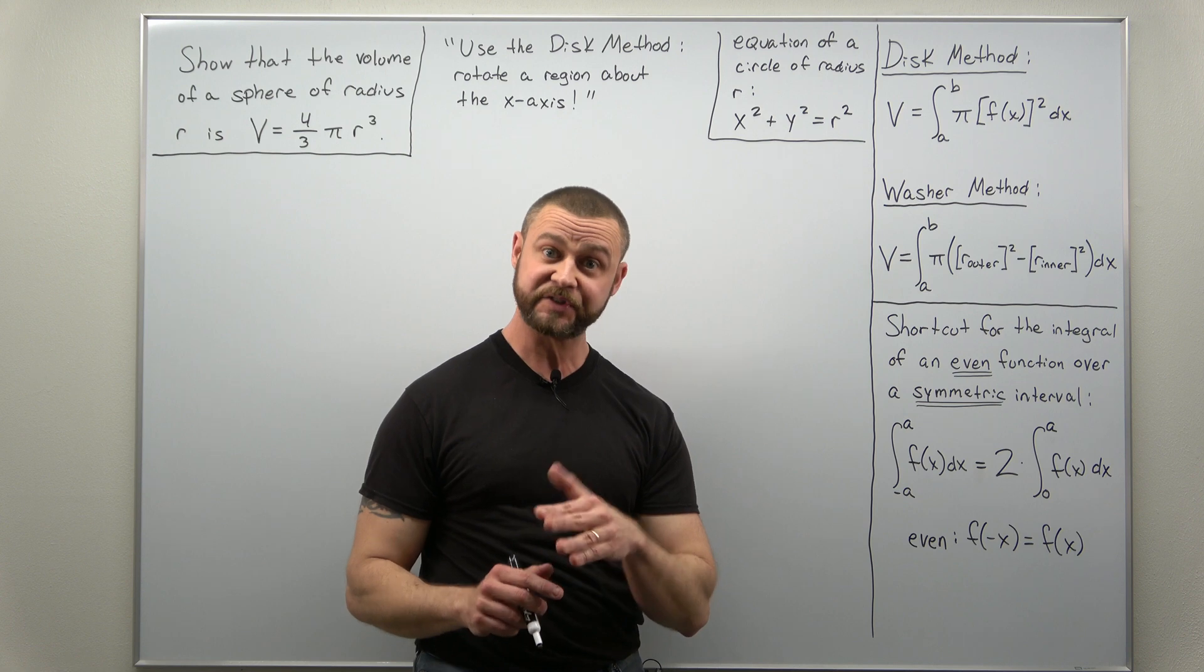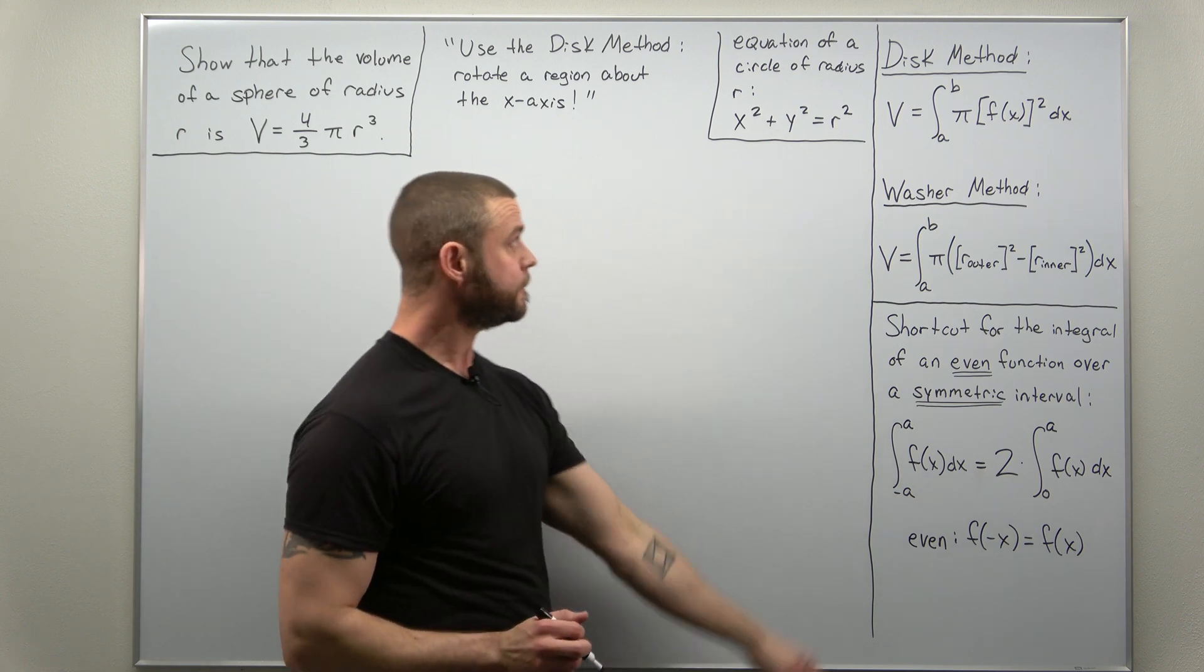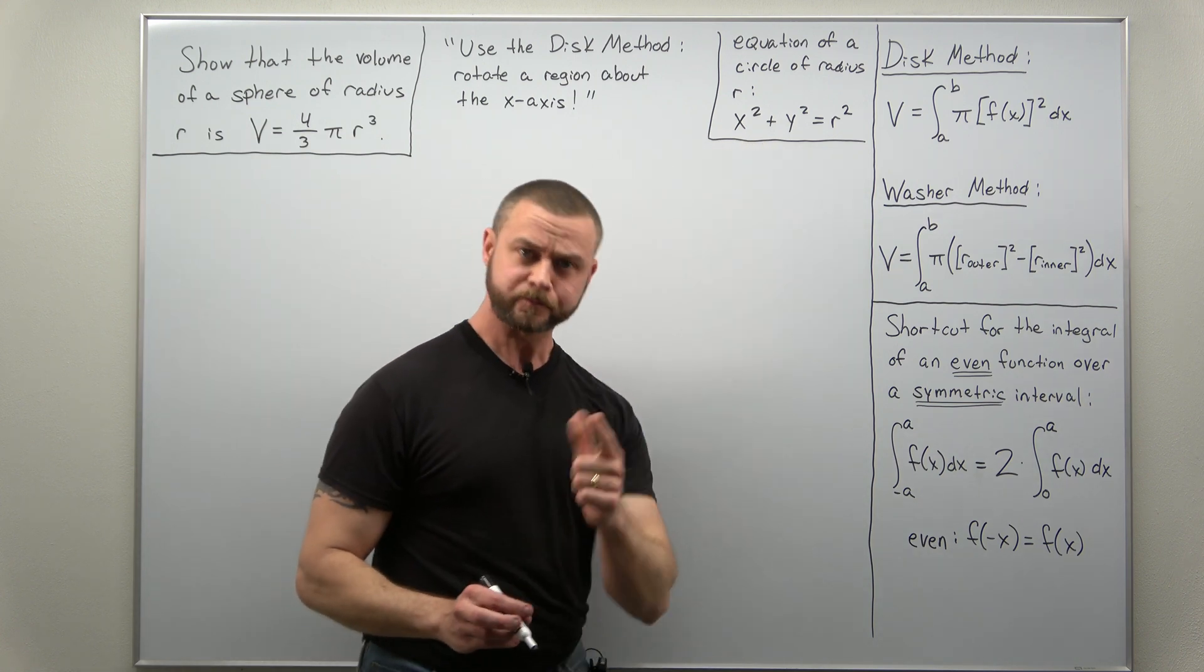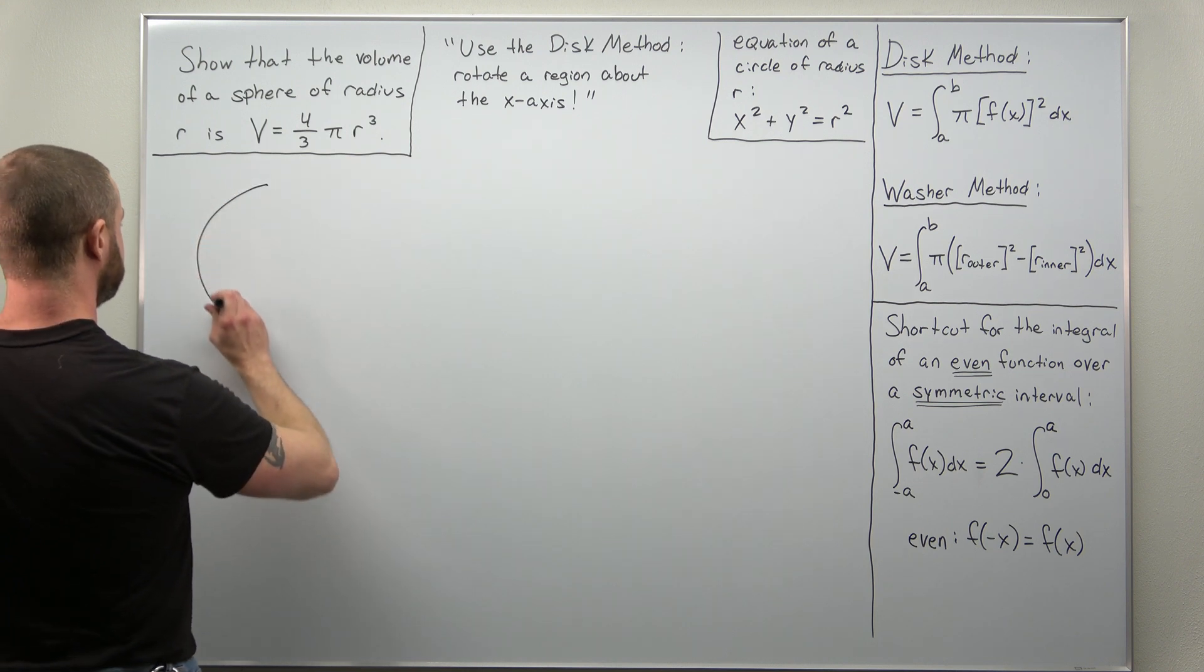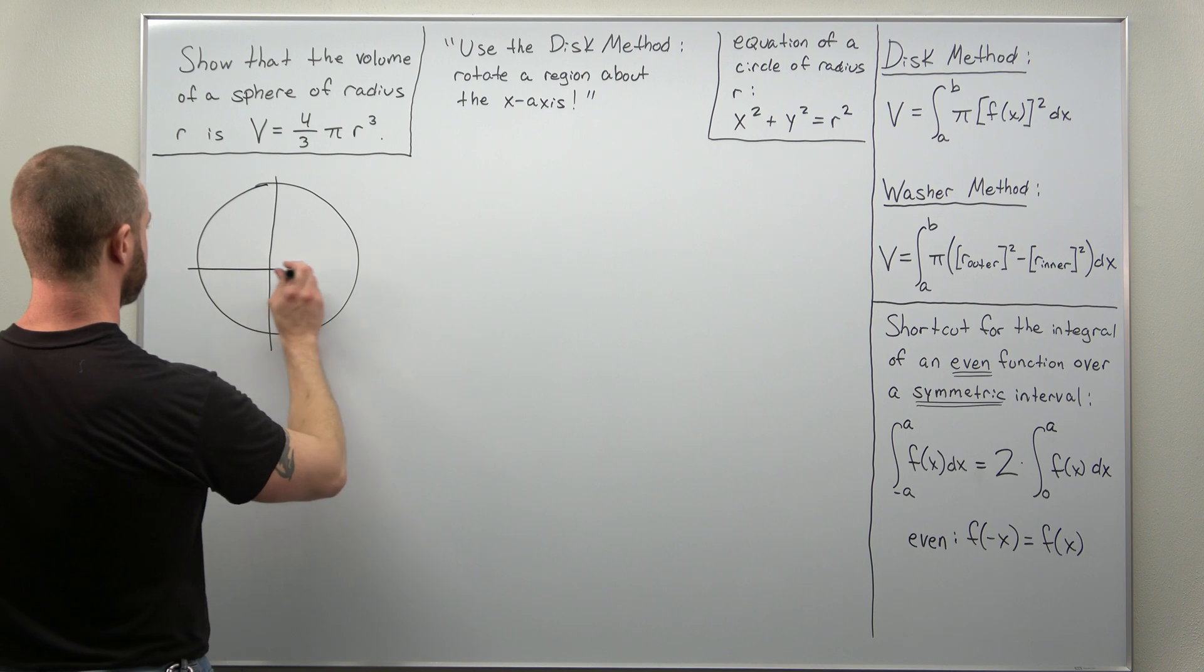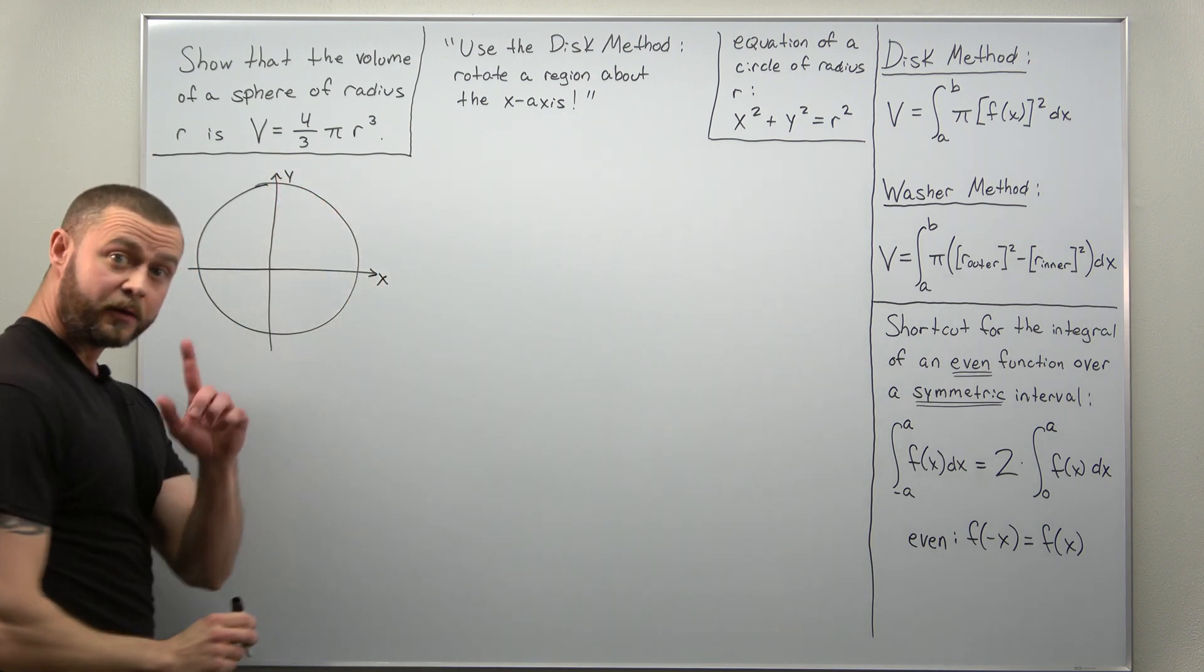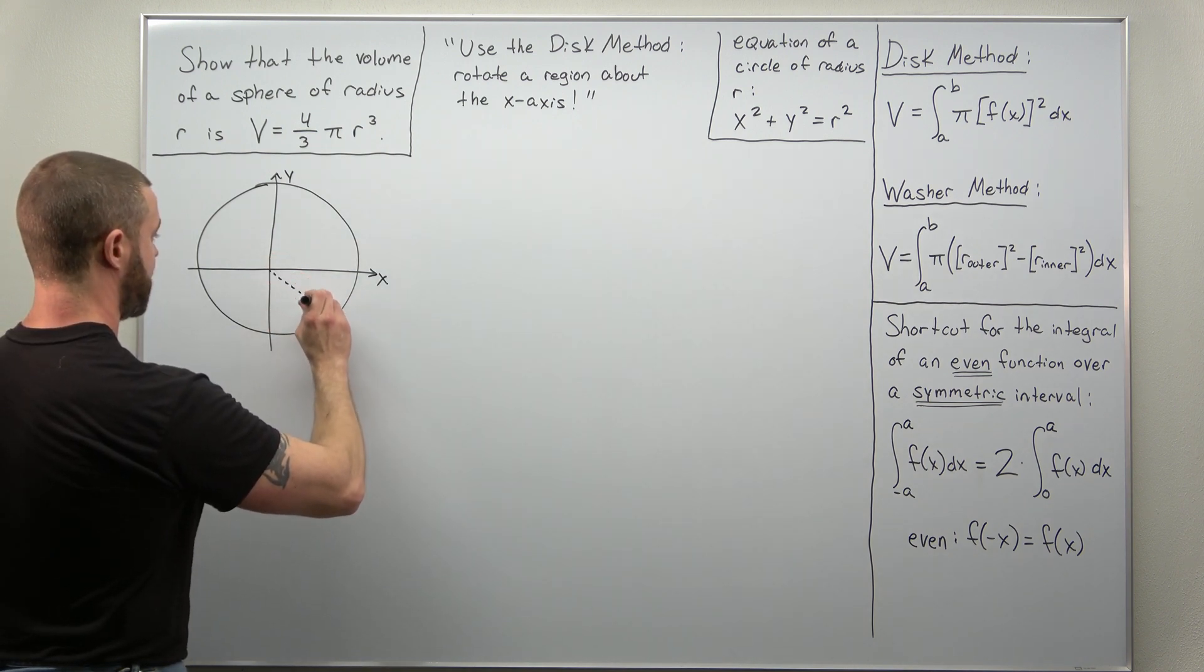So our starting place, let's go back to two dimensions to the equation of a circle: x squared plus y squared equals r squared. So let's start there. We'll just draw a circle in two dimensions and we're going to denote the radius of that circle as r.